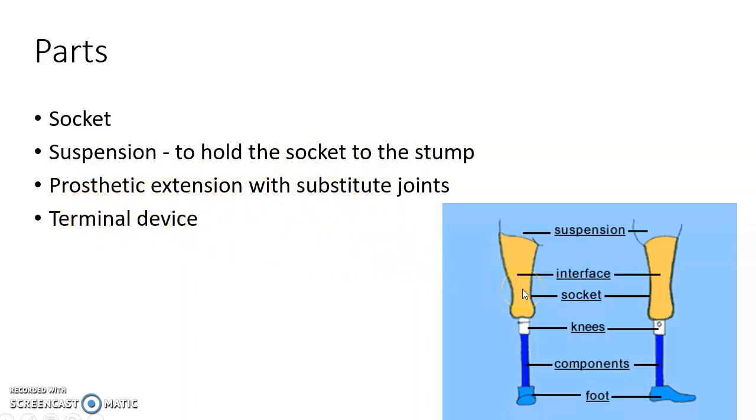This picture shows the various parts of a prosthesis. As you can see, this is the socket. This socket is attached to the stump by suspension. This is the prosthetic extension with substitute joints. In this case, it is a knee joint. And this is the terminal device. In this case, it is the prosthetic foot.